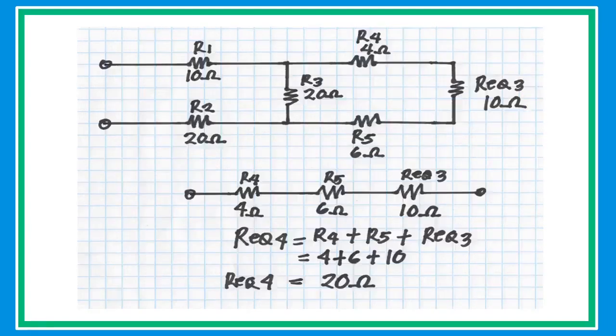In this new circuit, R4, R5, and R equivalent are connected in series. Since they are in series, simply add the three resistors — R4, R5, and R equivalent — and substitute the values to get an equivalent resistance of 20 ohms.